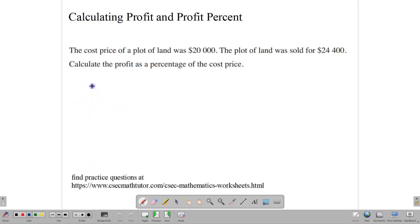Let's look at some questions. Here we're starting off with a simple one. The cost price of a plot of land was $20,000. The plot of land was sold for $24,000. Calculate the profit as a percentage of the cost price. So the first thing we need to do here is to ask ourselves how much profit was made.